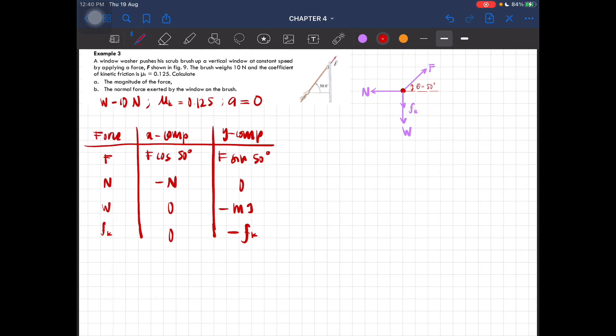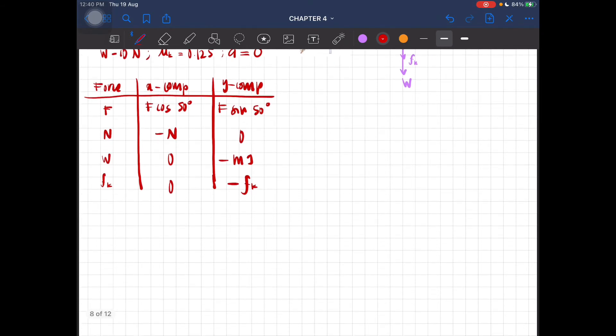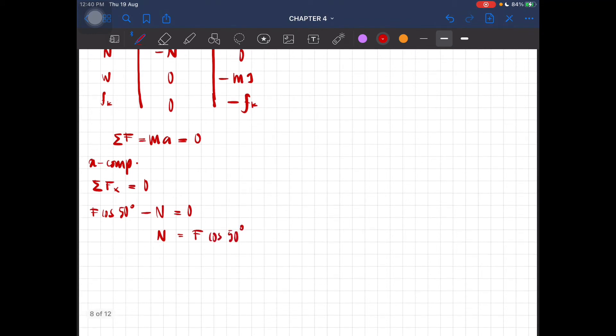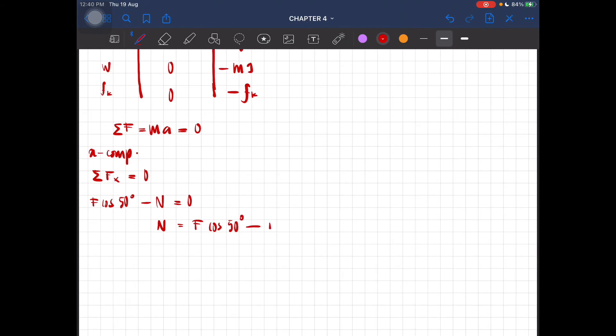Now we know that the brush moves at constant speed, so ma is equal to zero. Okay, so for x component, total F at x is equal to zero. So we have F cos 50 degrees minus N equal to zero. So N here is equal to F cos 50 degrees. So this is our equation one. And then we look at the y component.